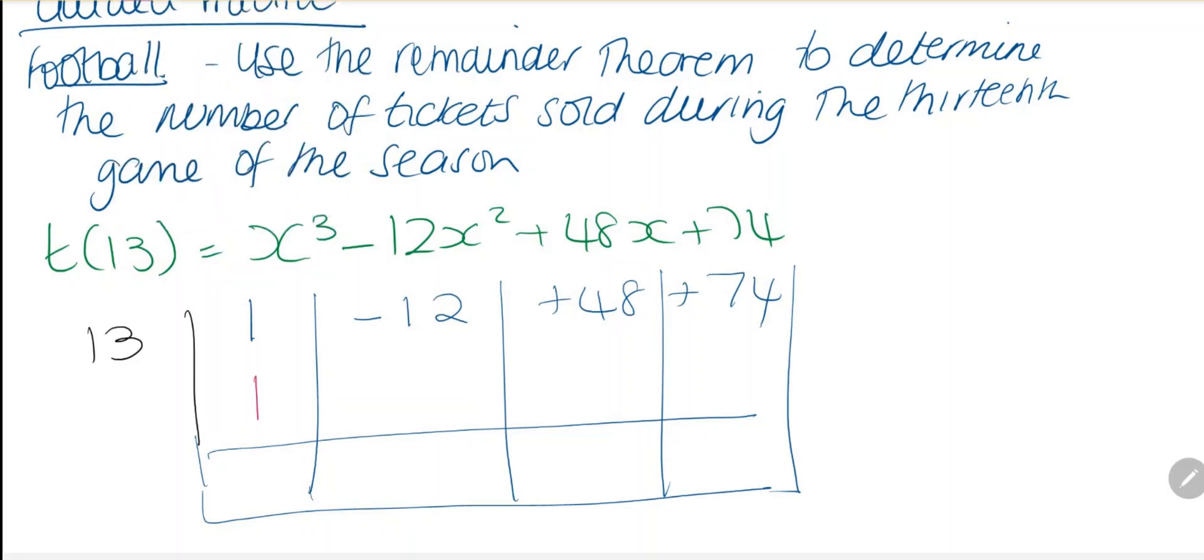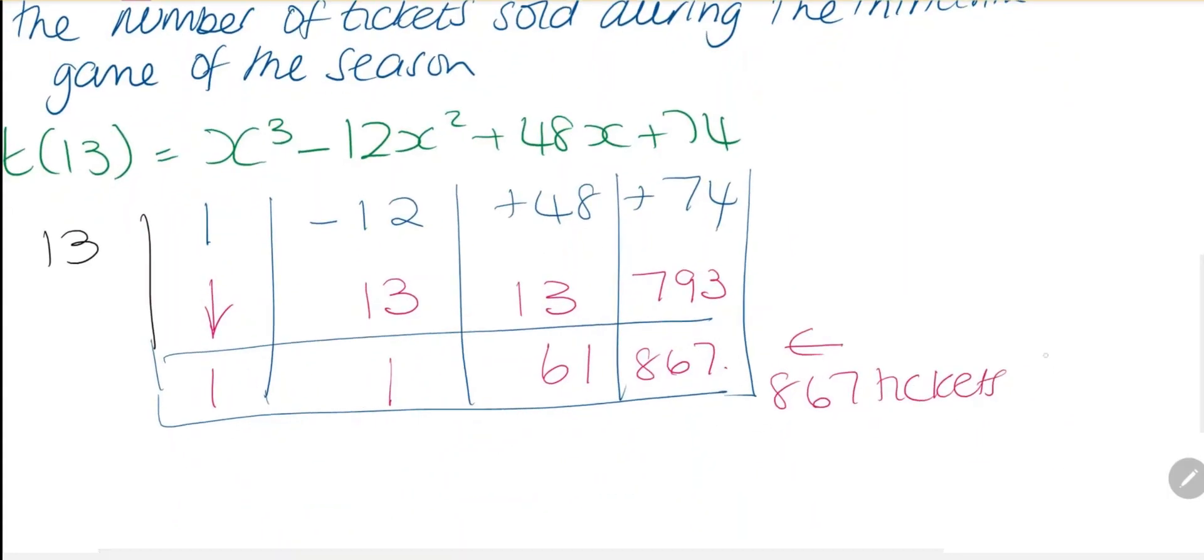We bring down the first value, 1. 1 multiplied by 13 is 13. If we add our values, we get 1. 1 times 13 is 13. 48 plus 13 is 61. 61 multiplied by 13 is 793. And if we add 74, we'll have 867. So there are 867 tickets for the 13th game.